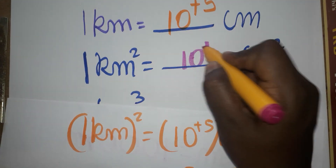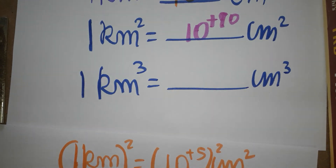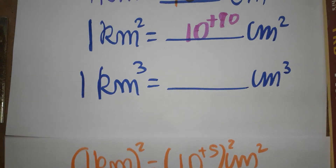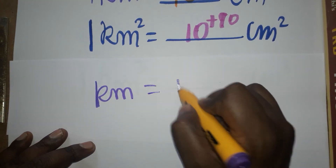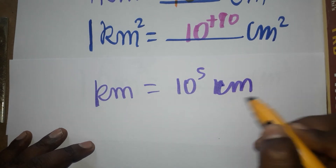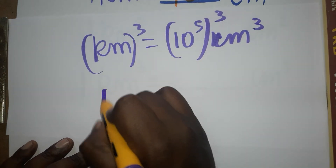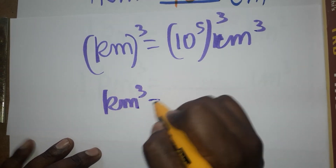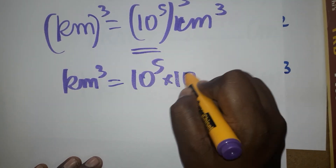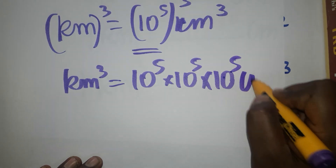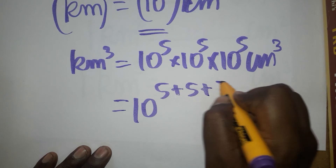Next, one kilometer cube equals how many centimeter cube? This is also very simple. We know one kilometer is 10 power 5 centimeters, so kilometer cube means we multiply 10 power 5 three times: 10 power 5 into 10 power 5 into 10 power 5 centimeter cube.